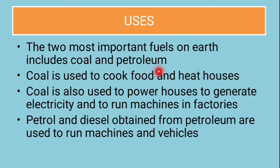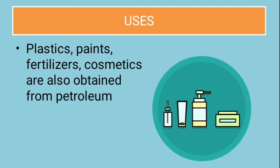Coal is used to cook food and heat houses. Coal is also used to generate electricity and to run machines in factories. Petrol and diesel obtained from petroleum are used to run machines and vehicles. Plastic, paints, fertilizers and cosmetics are also obtained from petroleum.